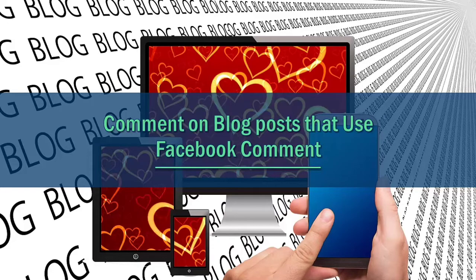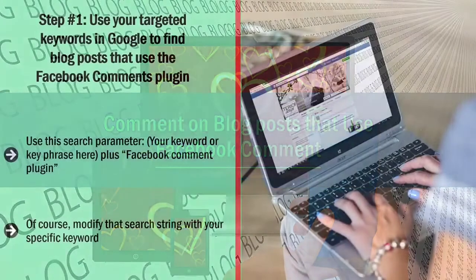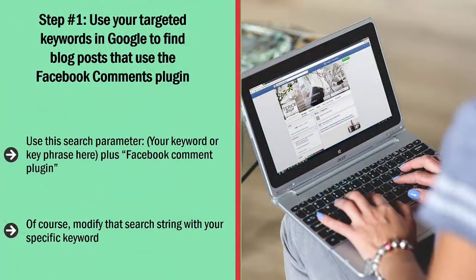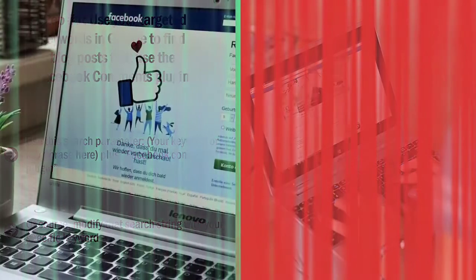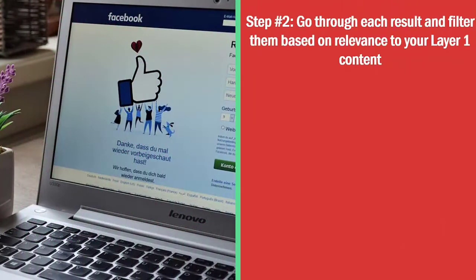Here are the step-by-step directions for the Facebook comments marketing technique. Step number one: use your targeted keywords in Google to find blog posts that use the Facebook comments plugin. Use the search parameter: your keyword or key phrase plus 'Facebook comment plugin.' Modify the search string with your specific keyword, using one keyword at a time. Do unique searches for each keyword using that string and you should retrieve a lot of results on Google.